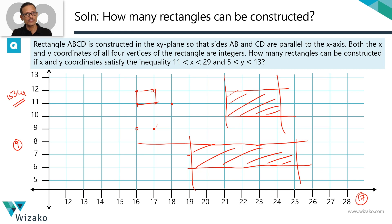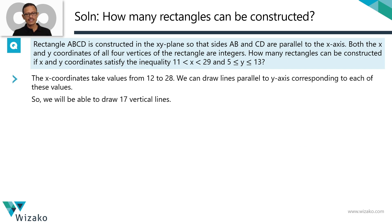So all that we need to do is to figure out in how many ways can I pick two horizontal lines and how many ways can I pick two vertical lines. We have realized that we have a total of 17 vertical lines because X coordinates take values from 12 to 28. For each of these values, we can draw a vertical line. So out of these 17 vertical lines, we need to pick two. How many ways can I achieve that? I can do that in 17 C2 ways.